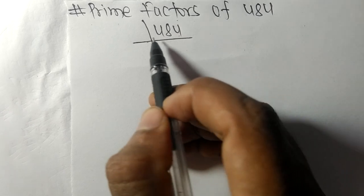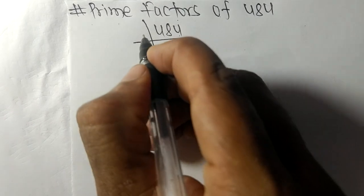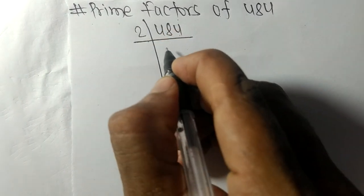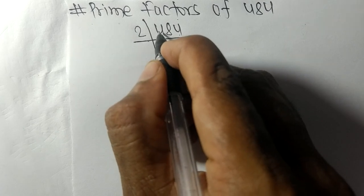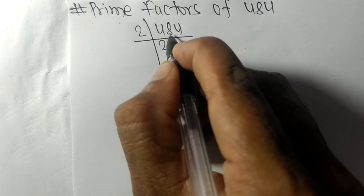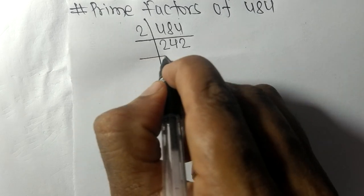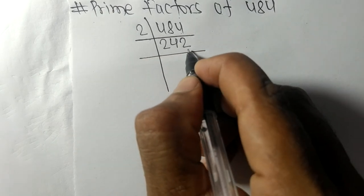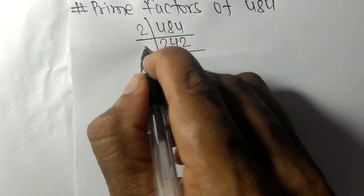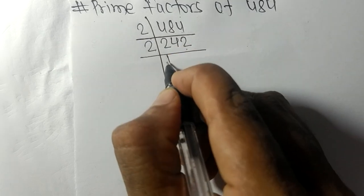2 times 242 equals 484. 2 times 121 equals 242. Again it has an even number, so it is divisible by 2.